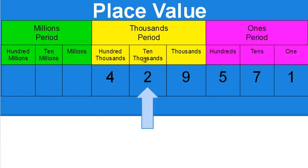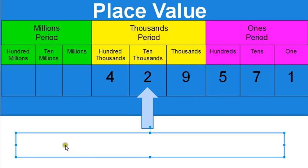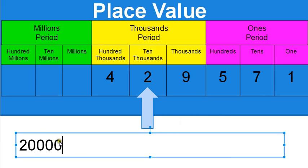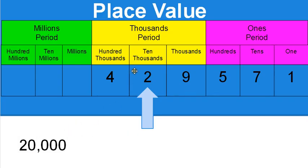The next one is in the thousands period — it's the second number in the thousands period, the fifth digit over: ones, tens, hundreds, thousands, ten thousands — so it's in the ten thousands place. Since there's a two there, we leave a zero in the thousands place, zero in the hundreds, zero in the tens, zero in the ones. That gives us twenty thousand. Two in the tens place would be twenty, so two in the ten thousands place is twenty thousand.